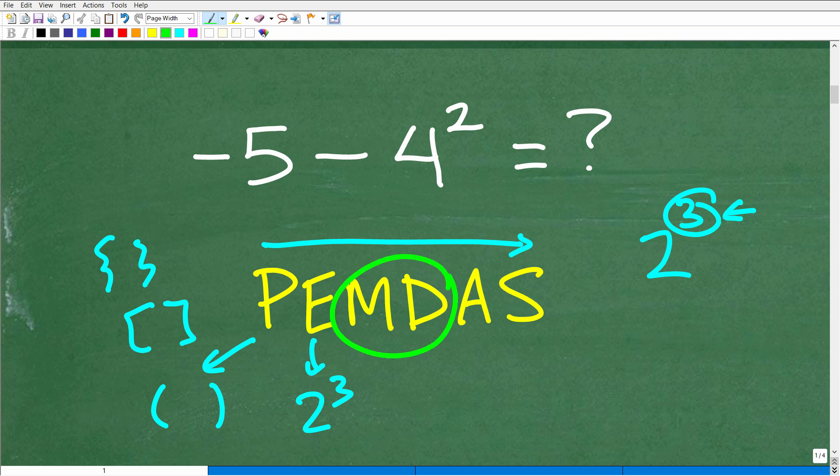Now the next thing is M and D. Now a lot of students confuse this. They think the M is multiplication and the D is division. That's what it stands for. M, D stands for multiplication and division. A is addition and S is subtraction. So a lot of students think, oh, I must do multiplication, then division, then addition and subtraction in this strict order. That's actually not the case.